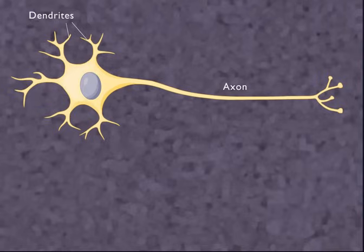When a neuron is at rest, a charge difference is maintained between the inside and outside of the cell.